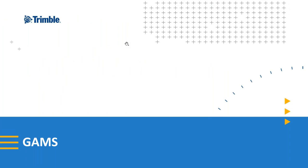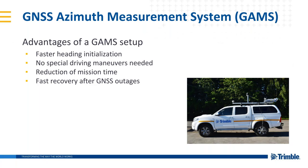Let's go to the first actual topic: GAMS. GAMS stands for GNSS Azimuth Measurement System. In short, we call it GAMS. Looking at the picture on the right, we have an MX2 system — there's a primary antenna on top of the MX2 pod, but we actually have a second GNSS antenna in the front, and this second antenna is called the GAMS antenna. The first advantage of GAMS is that we can get faster heading initialization in the field, meaning we don't always need to do special driving maneuvers like driving a figure-eight in a parking lot, which really reduces the time needed to complete our mission.